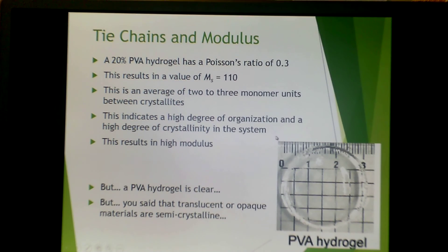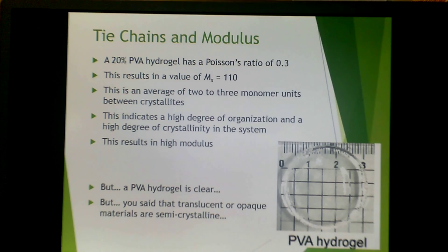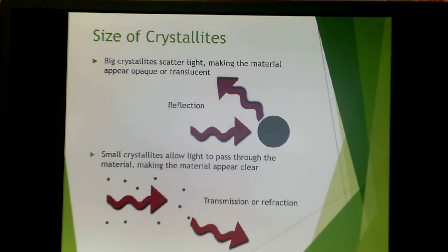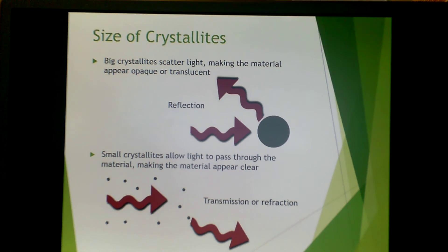Although semicrystalline polymers are generally translucent or opaque, a PVA hydrogel can appear as a clear gel. The size of the crystallite makes a difference in appearance: big crystallites will scatter light, making the material appear opaque or translucent due to reflection of visible light. Small crystallites will allow light to pass through, making the material appear clear. So you can have a semicrystalline polymer that appears clear and still have some degree of crystallinity, if the size of the crystallites is small.